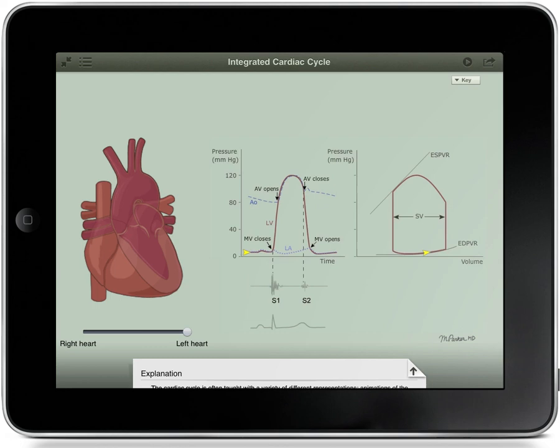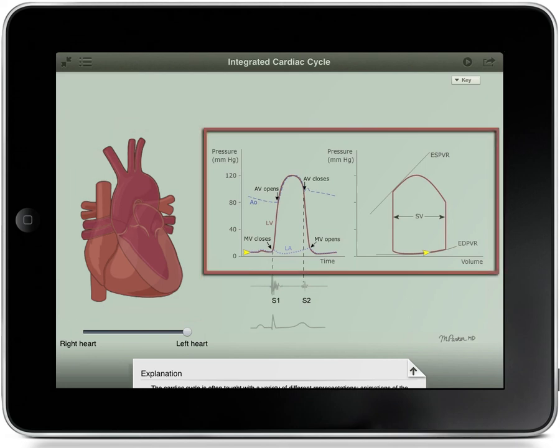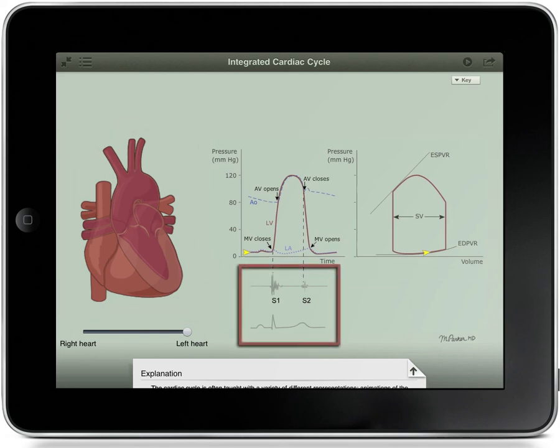The cardiac cycle is often taught with a variety of different representations: animations of the heart beating, graphs of pressure or volume changes, and tracings of heart sounds and electrical activity. This diagram brings together several of these types of representations to help you form connections between these ways of looking at the heart.